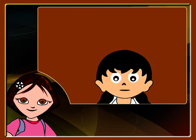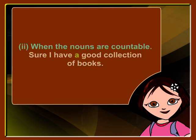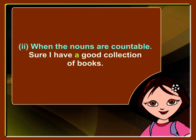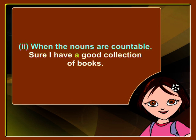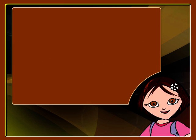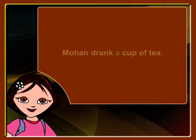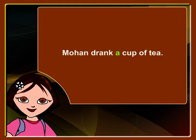Anita says: 'Sure, I have a good collection of books. I can lend you any to read.' Here, A has been used before the noun book because book is a countable noun — the number of books can be counted. Look at another example: 'Mohan drank a cup of tea.' A has been used before the noun cup because cup is a countable noun and the number of cups can be counted.